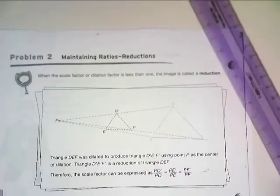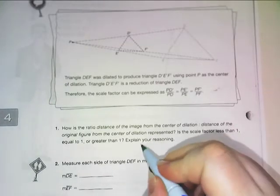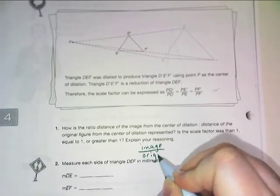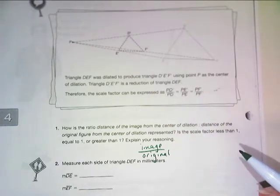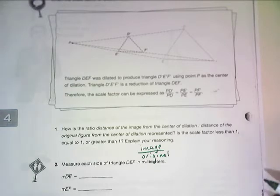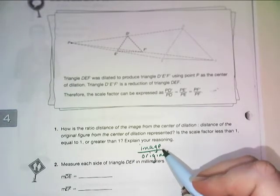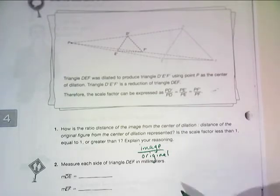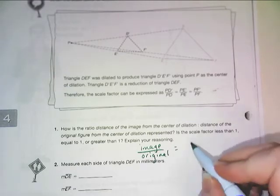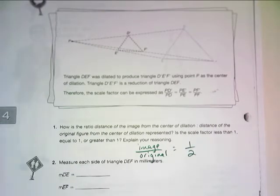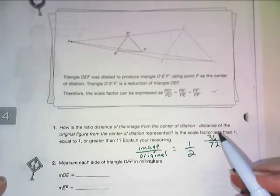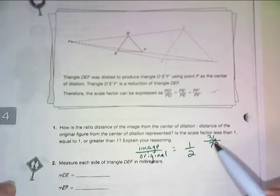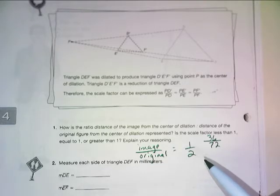So when I want to find that ratio again of image over original, and again, this time, we're not talking about side lengths, we're talking about the distance from the center of dilation to the points in those shapes. I would have to pick a pair of corresponding vertices like E and E prime. So the distance from the center of dilation to the image over the distance to the original. And again, when I reduce that, I'm going to get 1 half. Specifically with E and E prime, I think we found it was 72 millimeters out to the original and 36 millimeters out to the image. So when you reduce that fraction, it reduces to 1 half. But you would get that same reduced scale factor no matter which pair of corresponding vertices you chose.